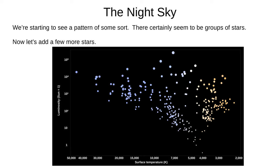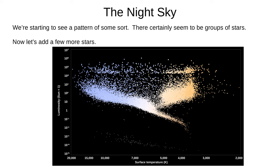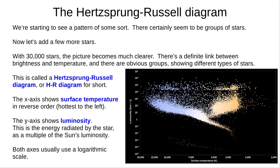We're starting to see some clear patterns with groups of stars, and these patterns are clearer if we add a few more stars. With 30,000 stars the patterns become very obvious. There's a definite link between brightness and temperature and there are clear groups of different types of stars. This is called a Hertzsprung-Russell diagram — although nobody can remember how to spell it, so astronomers usually just say HR diagram, and that's good enough for Google.